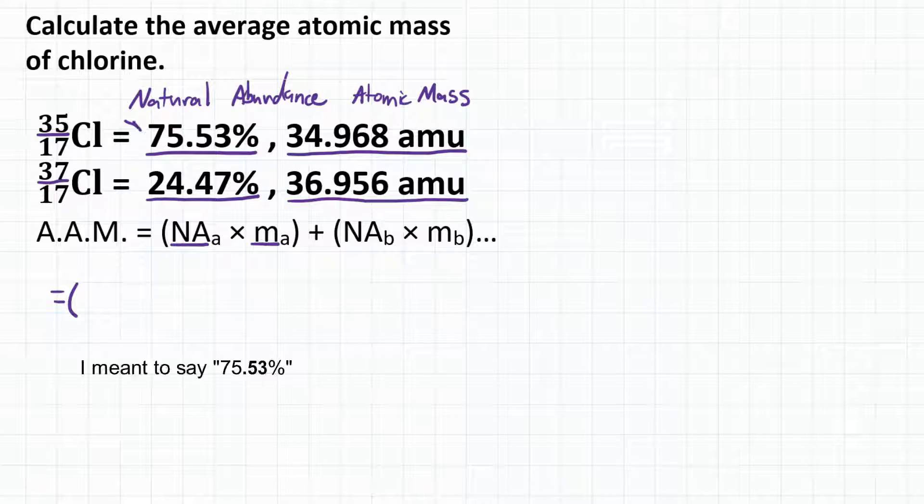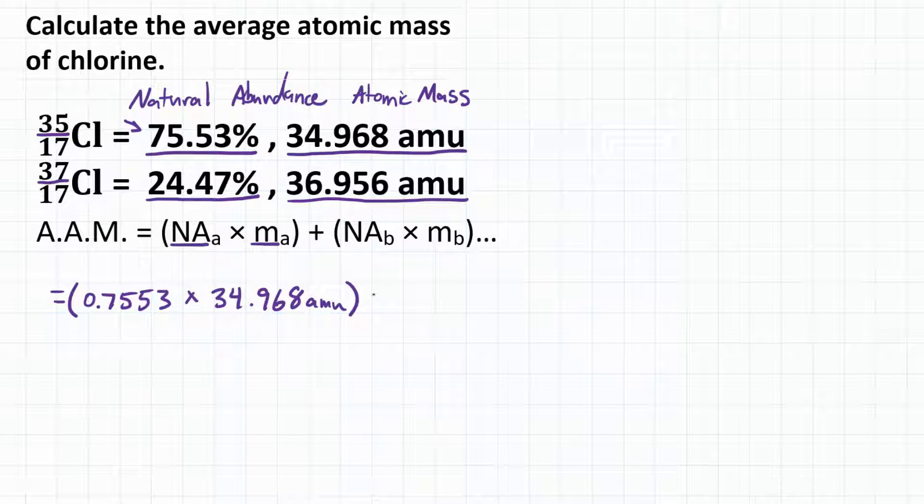So 75.53%, we're going to turn into 0.7553, and we're going to multiply that by the atomic mass, which is 34.968 AMUs. And we will add to that the natural abundance times the atomic mass of our other isotope,